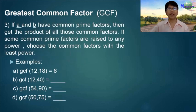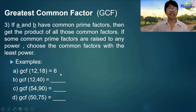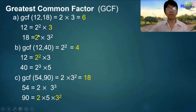Rule 3: if A and B have common prime factors, get the product of all those common factors. If some common prime factors are raised to any power, choose the common factor with the least power. Example: GCF of 12 and 18 is 6. We factor 12 and 18, identify common factors: we have 2-squared and 2, and 3 and 3-squared. We pick the factors with the smaller power — 2 and 3 — and multiply them to get 6.